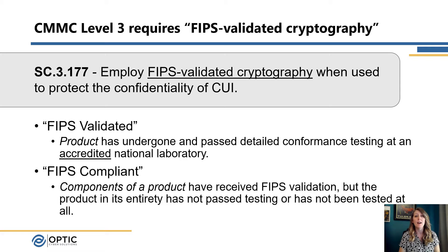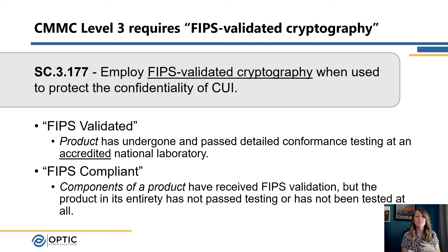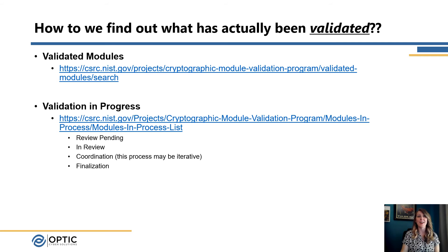Another point we wanted to clarify: there's a lot of misleading language in industry right now. The practice requires FIPS validated cryptography, but there are also terms thrown around like 'FIPS compliant' or 'FIPS approved.' Validated specifically means the product has undergone and passed conformance testing at a national laboratory — someone has run tests using different equipment to verify the encryption is being used appropriately and that the whole module, not just the algorithm, has been implemented correctly. That's done through the CMVP program at NIST. FIPS compliant may mean that components of the product received validation but the whole product itself may not have.